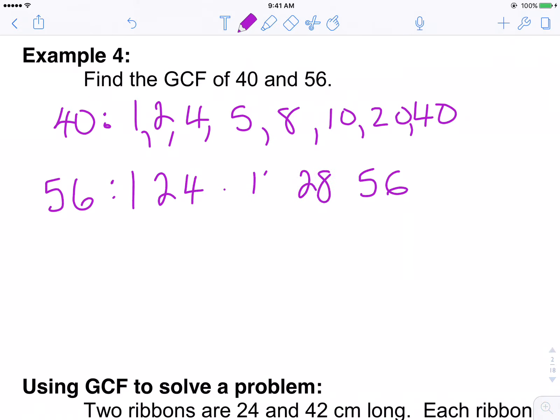I do the same for 56. 1 times 56, 2 times 28, 3, 4 times 14. 4, 5... Oh, I did 4. 5, 6, 7, 7, and 8. There are my factors for 56.